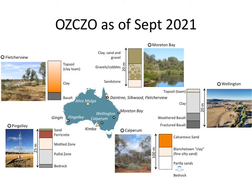At this point our proposed pilot network has five core sites and several satellite sites. Our five core sites, where we'll be installing new instrumentation, are at Pingerley in Western Australia, Calparum on the Murray floodplain, Wellington in the Upper Macquarie River Basin, at Moreton Bay in the peri-urban outskirts of Brisbane, and Fletcherview, a rangeland site in the Burdekin Basin.